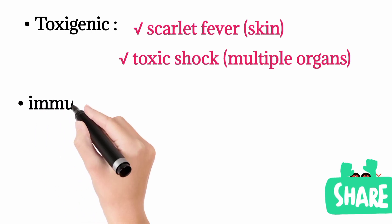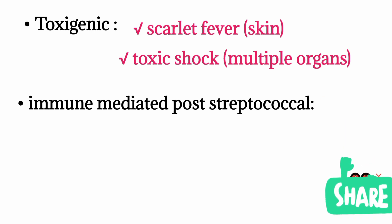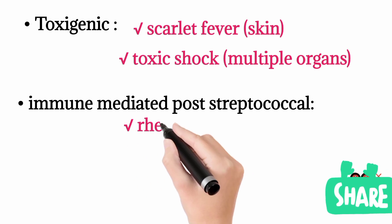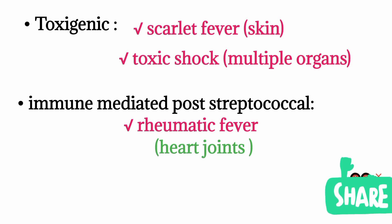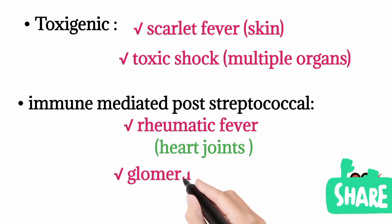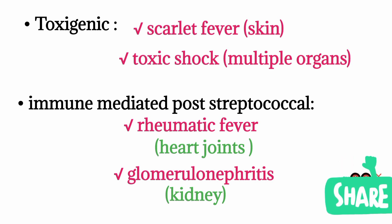Finally, we have immune-mediated post-streptococcal reactions. Streptococcal infection will occur, and in response the immune system will be activated, forming antibodies that may be targeted against your own tissues, for example the heart and joints — this is rheumatic fever. Additionally, if the kidney is targeted by the antibodies produced against the organism, it causes glomerulonephritis. These are the ways in which Streptococcus pyogenes causes infection.